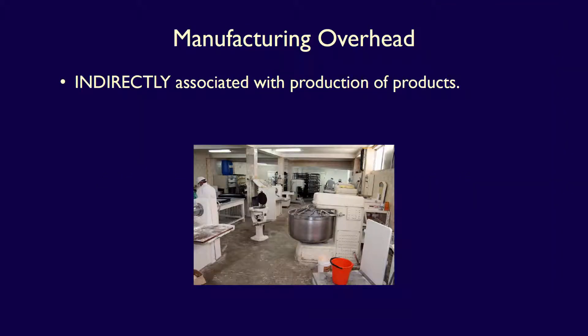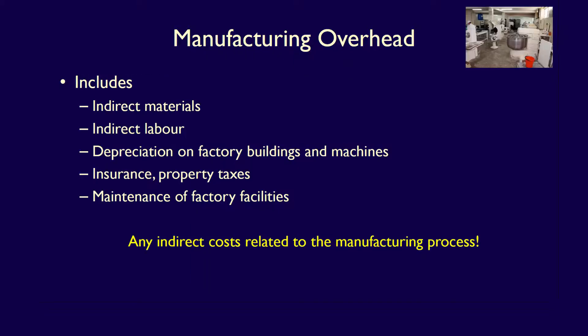The third category of manufacturing cost is called manufacturing overhead. It's made up of all the manufacturing costs which are indirectly associated with producing products. This would include costs such as indirect material, indirect labour, depreciation on the factory building and equipment, insurance on the factory, property taxes incurred on the factory, costs of maintaining the factory facilities, and any other indirect costs caused by the manufacturing process but not directly traceable.